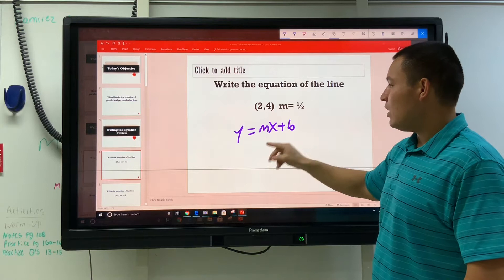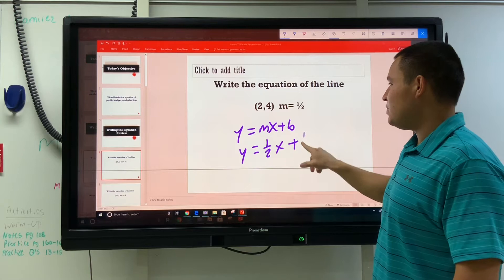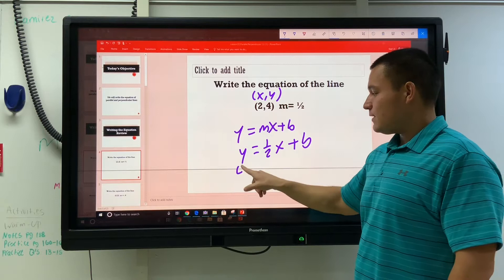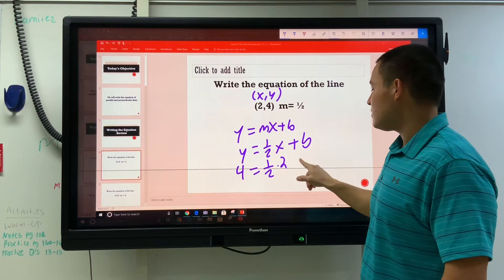really try to do y equals mx plus b. They gave you the m, 1 half x plus b. They gave you a point, and every point has an x and a y, every ordered pair is an x and a y. So let's take the y, put it for y, take the x, put it where x is, do 1 half times x plus b.